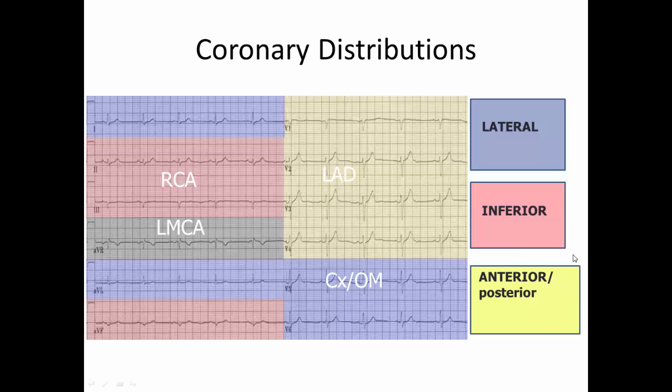Remember from our first ECG basics session that regions of myocardium supplied by different coronary arteries are reflected by contiguous leads. For example, leads 1, AVL, V5, and V6 reflect the lateral myocardium, which is supplied by the left circumflex artery and the obtuse marginal arteries.